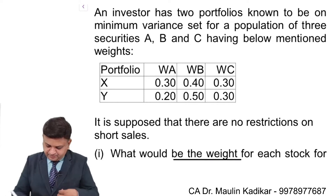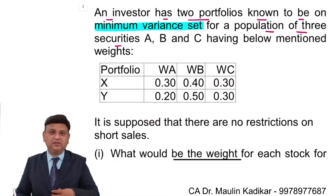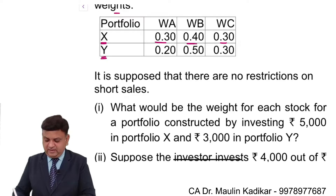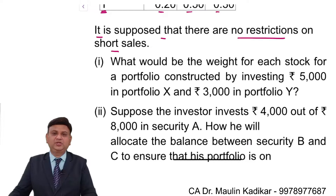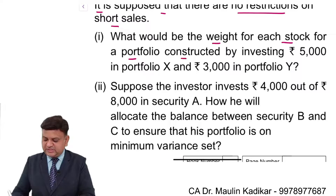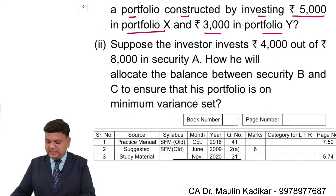An investor has two portfolios known to be on the minimum variance set for a population of three securities: A, B, and C. Portfolio X is a minimum variance portfolio with investment in three securities in given proportions. Portfolio Y also has given weights, and it is supposed that there are no restrictions on short sales. The question asks for the weight of each stock for a portfolio constructed by investing 5000 rupees in portfolio X and 3000 in portfolio Y.